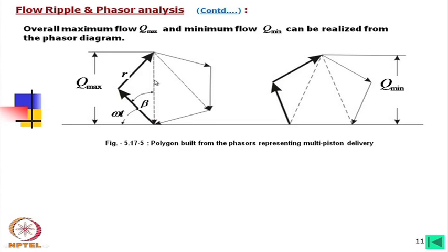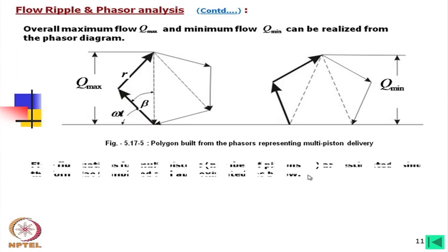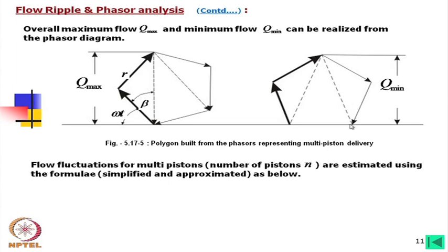The highest point of the polygon corresponds to maximum flow and the lowest to minimum flow in the flow ripple — producing a wavy curve. This is an ideal analysis based only on sinusoidal components, not considering higher harmonics, but it can be formulated analytically.